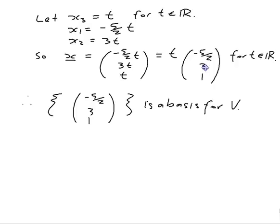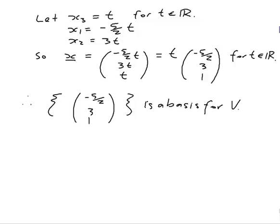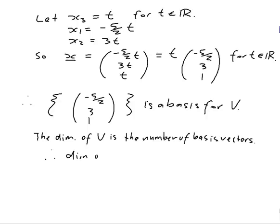So have I actually done everything I was supposed to do? I was supposed to find the dimension. Well, the definition of dimension is that it's the number of vectors in a basis. So the dimension of V is the number of basis vectors. I've only got one basis vector, so dimension of V is 1 and that really is the end of the problem.